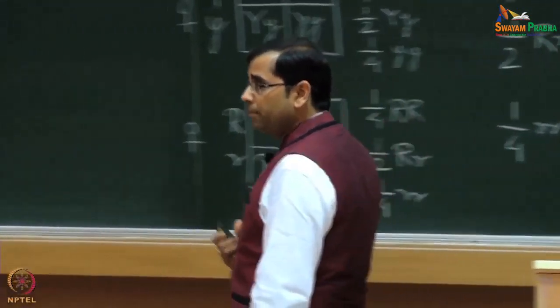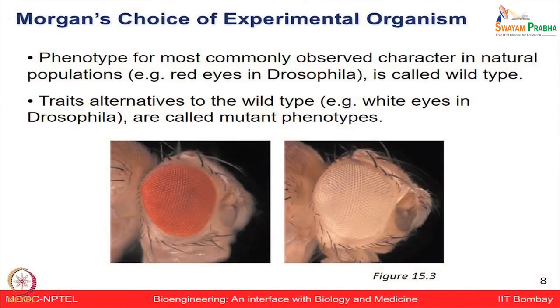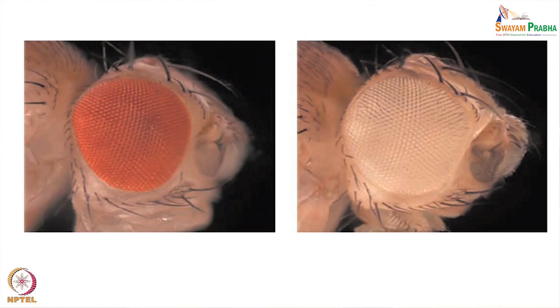The nomenclature of things we have been discussing from the pea plant will slightly change. Here we are talking about phenotypes of Drosophila. Some characteristics, if commonly found — for example red eyes — are the wild type character. If a deviation of that is found, it is known as mutant type behavior. So a white eye, which is not commonly found in Drosophila, is a mutant type, whereas the red eye is the normal wild type phenotype.